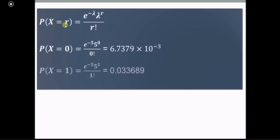Put r equal to 0 so that we will get probability of x equal to 0. It is e raised to minus lambda, lambda is 5, that is 5 raised to 0, divided by 0 factorial, and you will get this particular value.